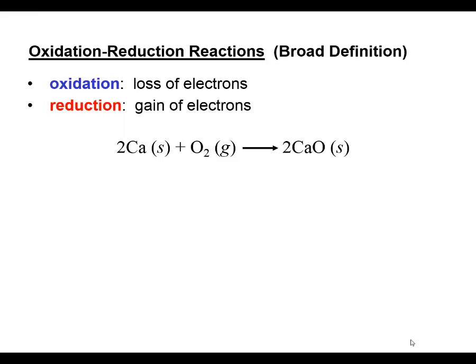Remember: oxidation is the loss of electrons, and reduction is the gain of electrons. If we consider calcium metal reacting with oxygen gas to form calcium oxide, we can determine what is going on with the transfer of electrons by thinking about what we are going to call oxidation numbers.